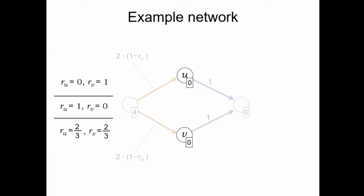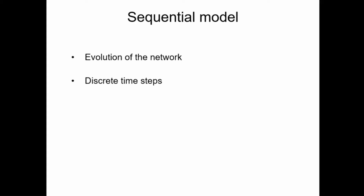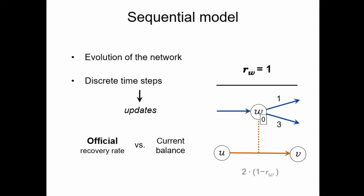There are many natural questions that only arise if we study the evolution of this system. Our main goal is to study a sequential model of financial systems, where the process consists of discrete time steps called updates. We assume that banks always have an official announced recovery rate, which might not equal their current balance, and every step consists of a specific bank adjusting its official recovery rate to the one that would follow from the current state of the system. Each node begins with an official recovery rate of 1, meaning initially there is no liability on the CDS. If it becomes clear that W only receives a payment of 2 on its incoming debt, it can and eventually has to make an update to set its official recovery rate to one half.